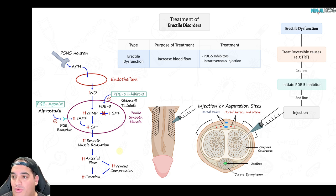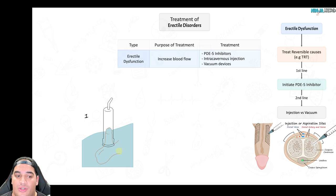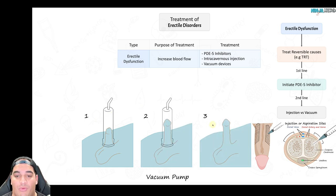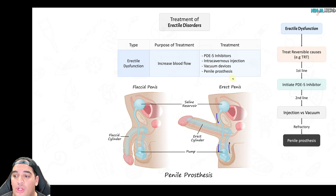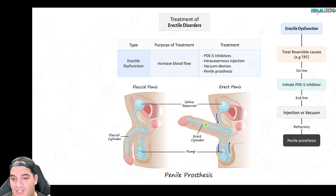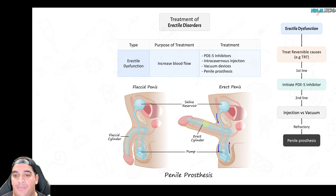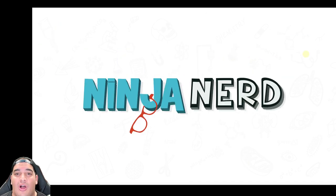If injections fail, vacuum devices can be used before intercourse to create pressure and achieve penile engorgement. If all else fails, a penile prosthesis can be considered, allowing the patient to trigger inflation on their own before sexual intercourse. This is the approach to treating erectile dysfunction, always attempting to treat reversible causes first when possible. That covers all the penile disorders — hopefully they made sense and were educational.